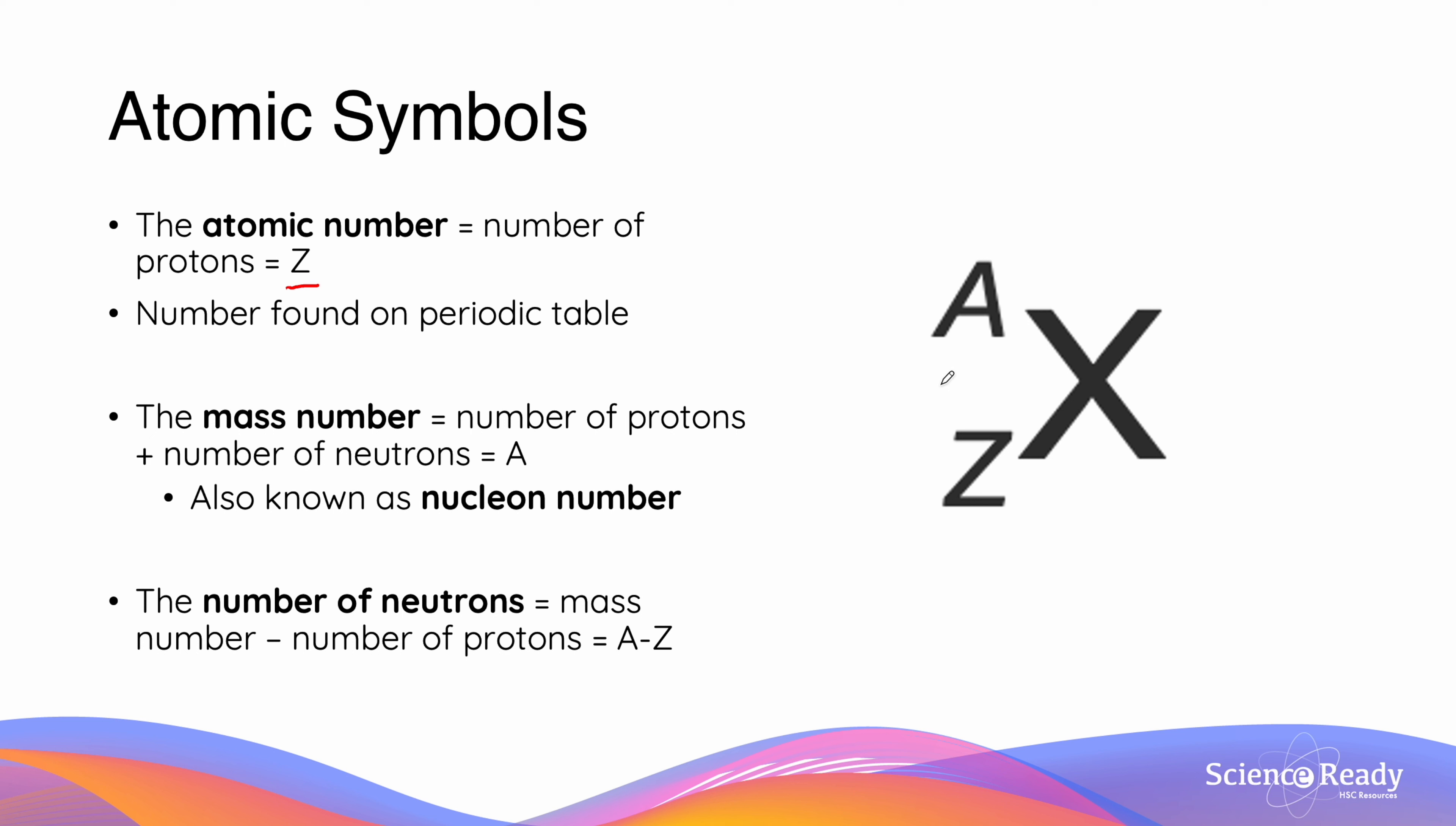The mass number is denoted by the letter A and is the number of protons and number of neutrons added together. This is overall known as the nucleon number. Nucleons being the collective name of both protons and neutrons. This number will be given to you if a question is asked regarding it.